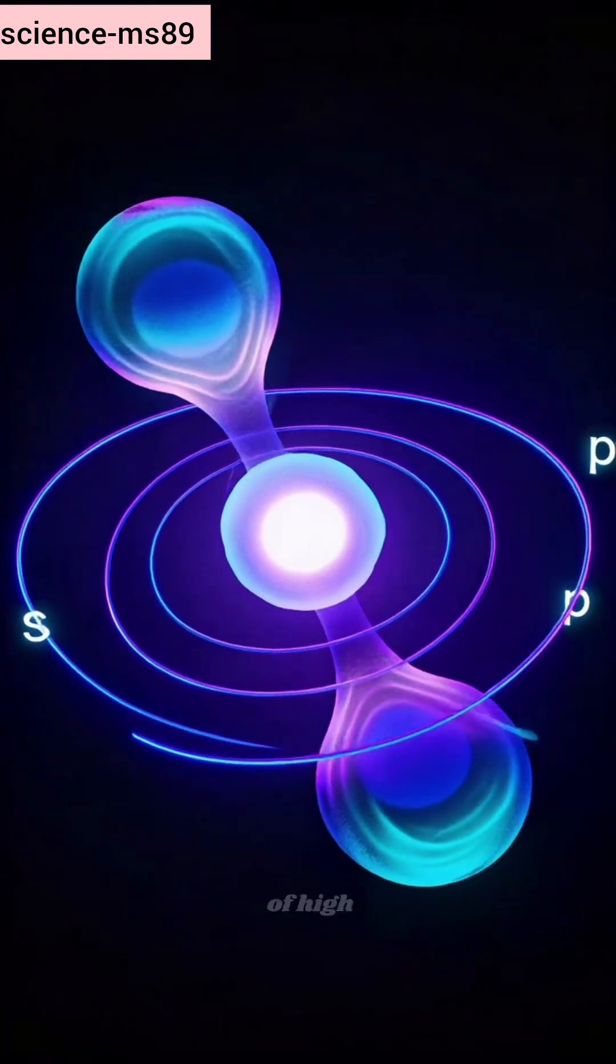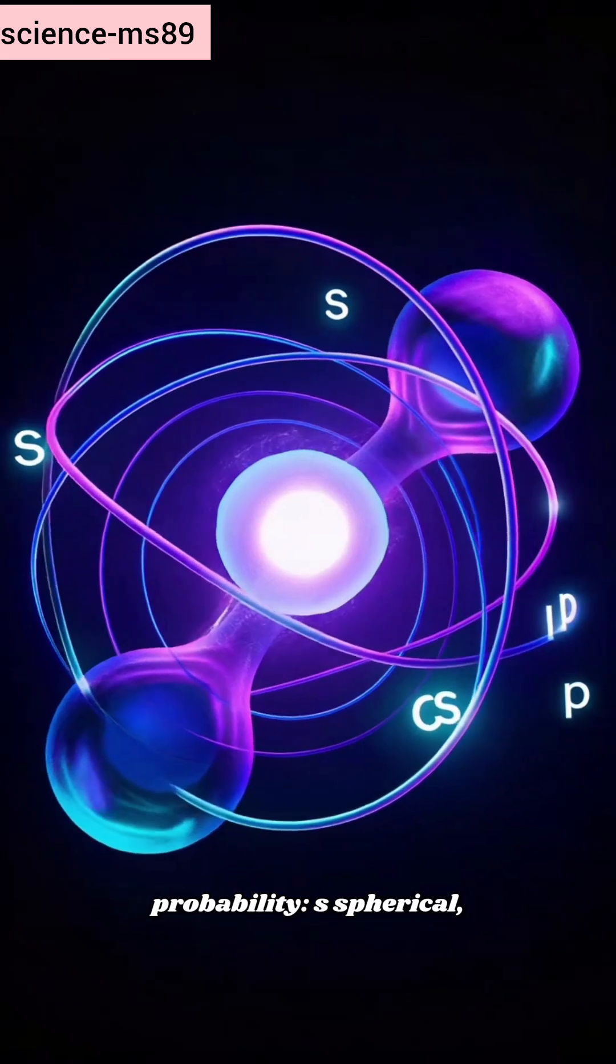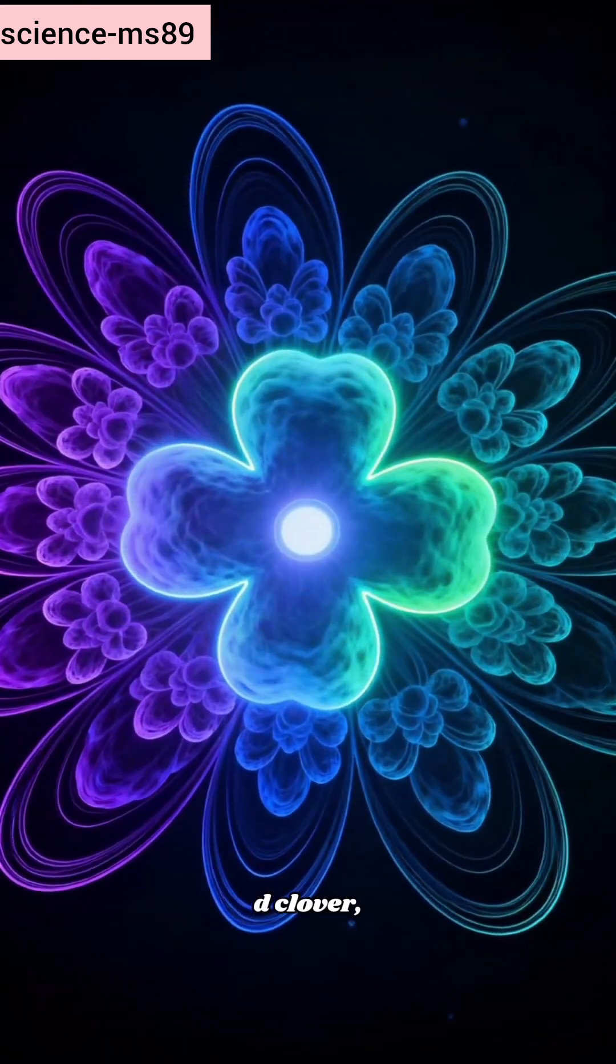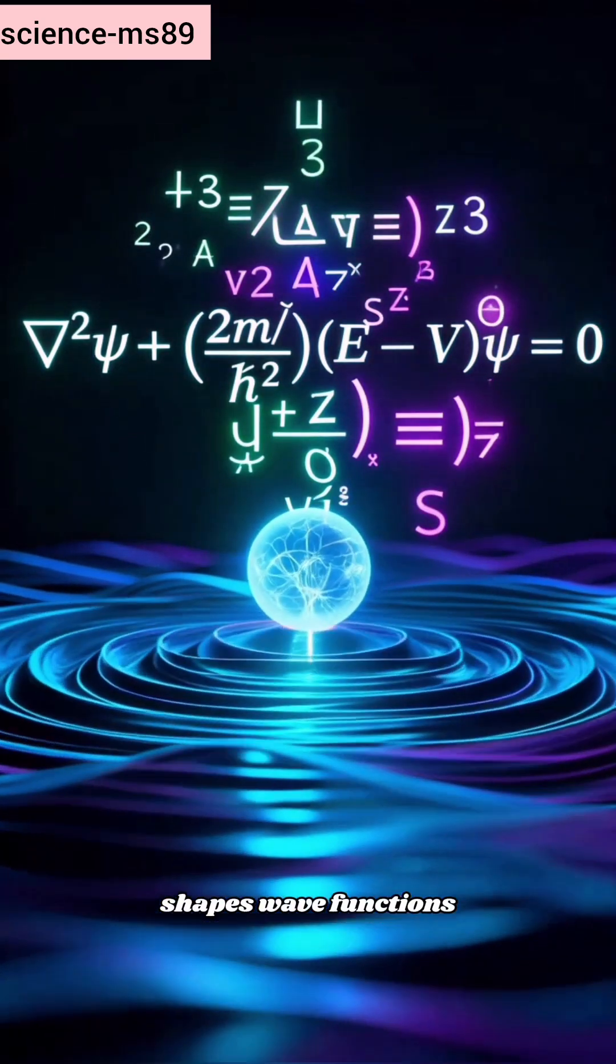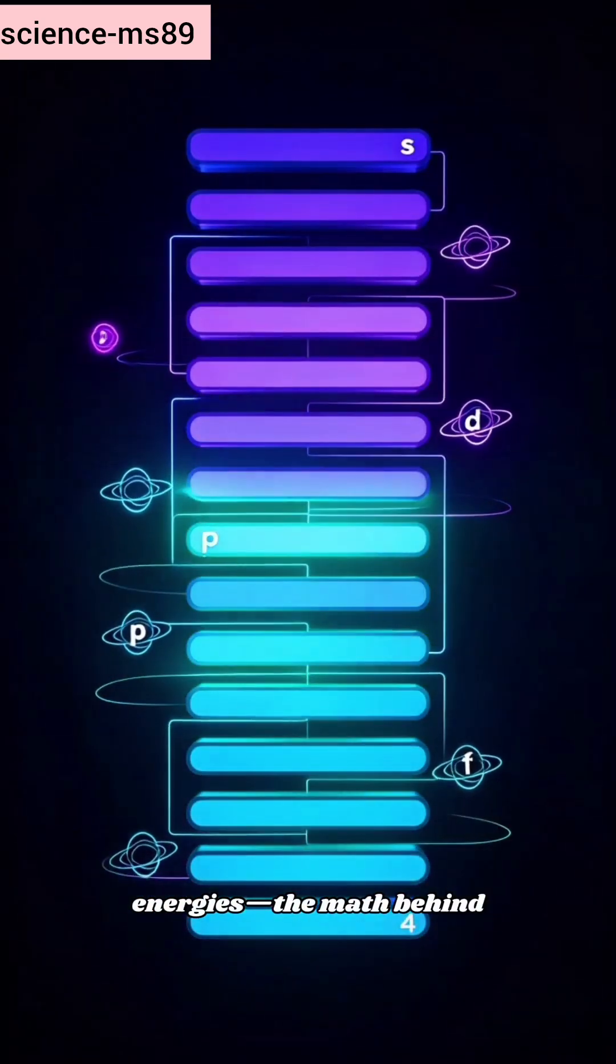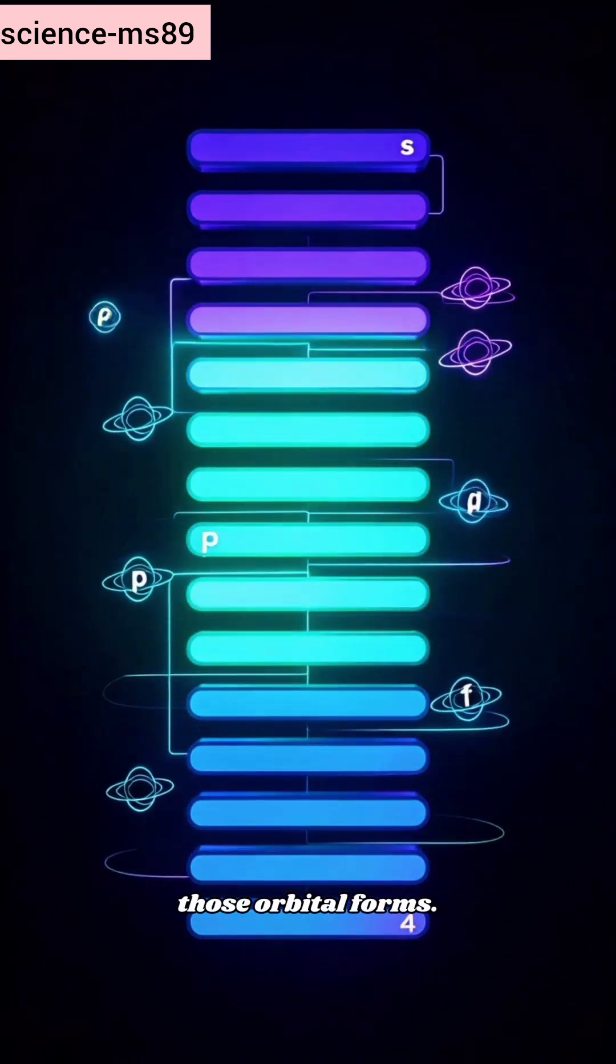Orbitals are regions of high probability. S spherical, P dumbbell, D clover, F intricate patterns. Schrödinger's equation shapes wave functions and predicts discrete energies, the math behind those orbital forms.